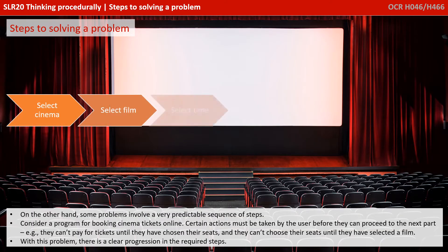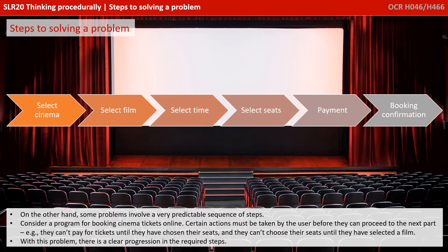On the other hand, some problems involve a very predictable sequence of steps. Consider a program for booking cinema tickets online. Certain actions must be taken by the user before they can proceed to the next part. For example, they shouldn't be able to pay for tickets until they've chosen their seats. They shouldn't be able to choose their seats until they've selected a film. With this sort of problem, there's a clear progression in the required steps.